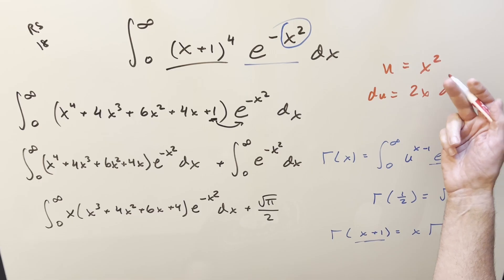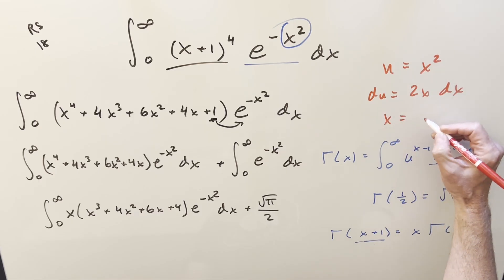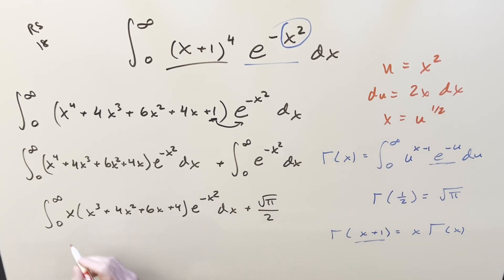While we're at it, let's get a value for x. So x is going to be square root of u, or I can write it as u^(1/2). Now to set up this 2x dx, I can multiply in a 2 here and multiply a 1/2 in front, so I'm not changing it.